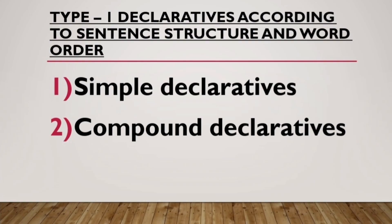There are two types of declaratives or declarative sentences. Today we will discuss Type 1. Type 1 of declaratives is according to the sentence structure and the word order, and Type 2 will be discussed in the upcoming video. So according to the sentence structure and the word order, the declaratives are divided into two parts: simple declaratives and compound declaratives.